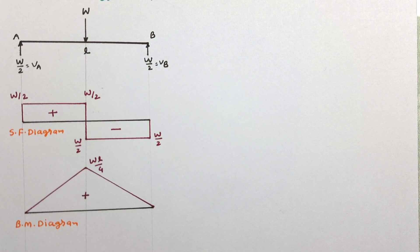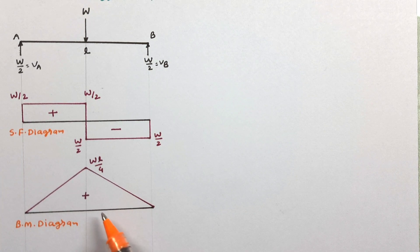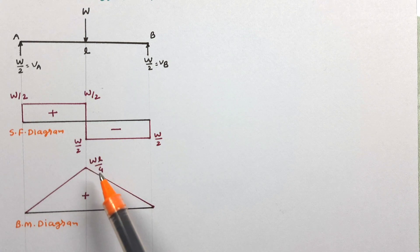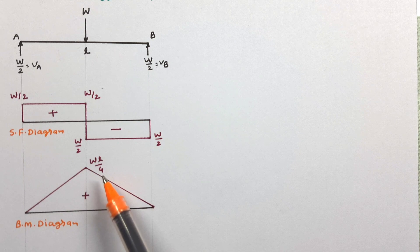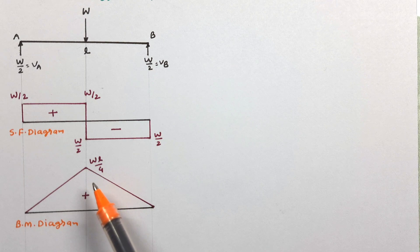The shear force and bending moment diagrams show the points where maximum shear force and maximum bending moment are acting. They also give the magnitude of such shear force and bending moment, which may be used for the design of the beam. So these diagrams are very important from a design point of view.